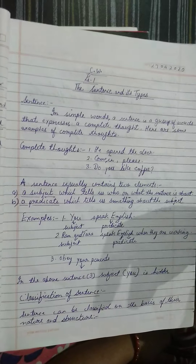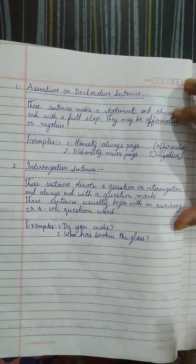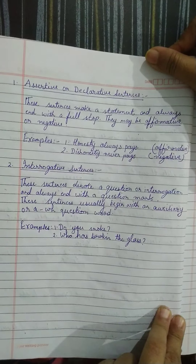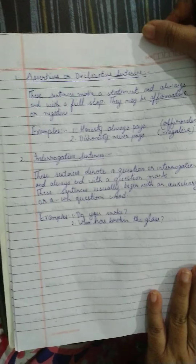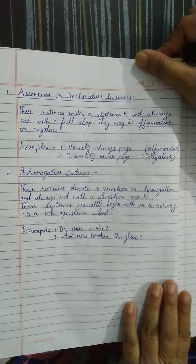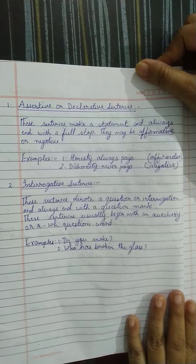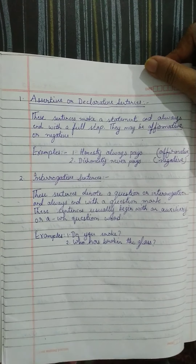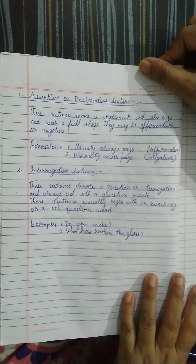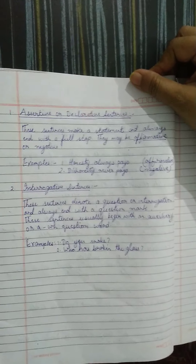Then you are coming to the classification of sentences. I taught you the day before yesterday about assertive or declarative sentences, so you are going to write the definition of assertive or declarative sentences and the examples. Then we are coming to the interrogative sentences — write the definitions and the examples as well.